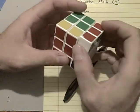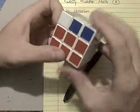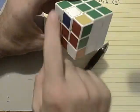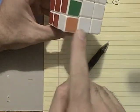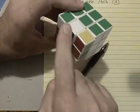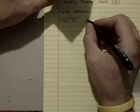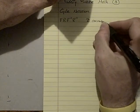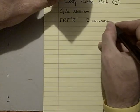So I have F R F prime R prime. What you notice is that the only pieces that were affected are these. And this move actually has a name. It's called a 2 commutator. And we'll talk about commutators later.